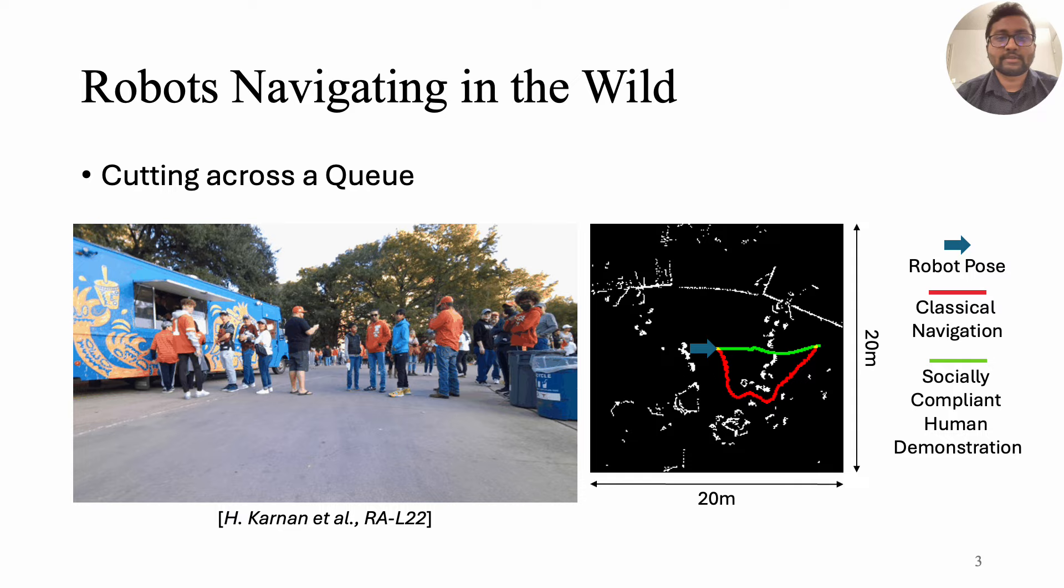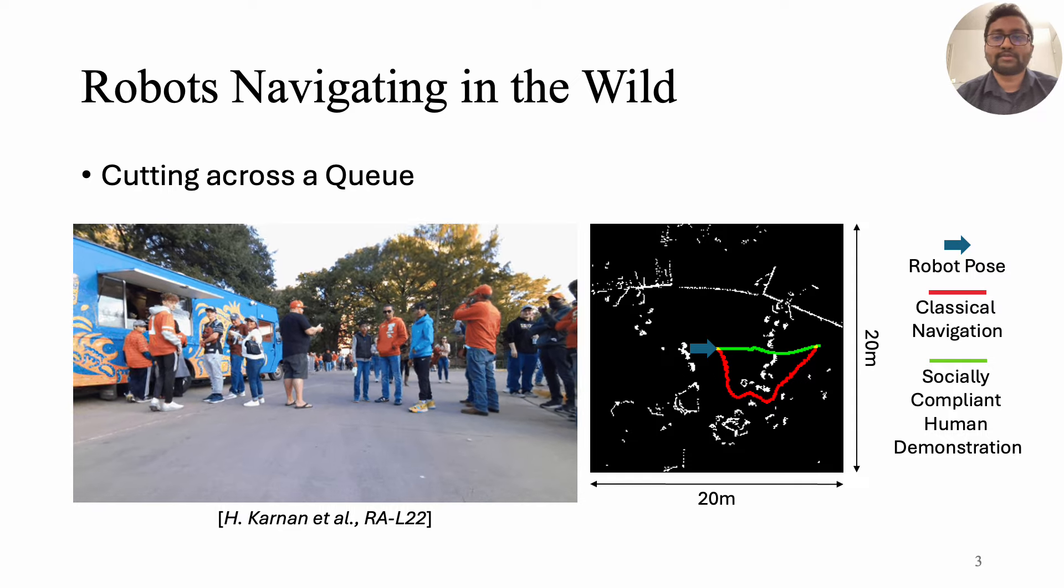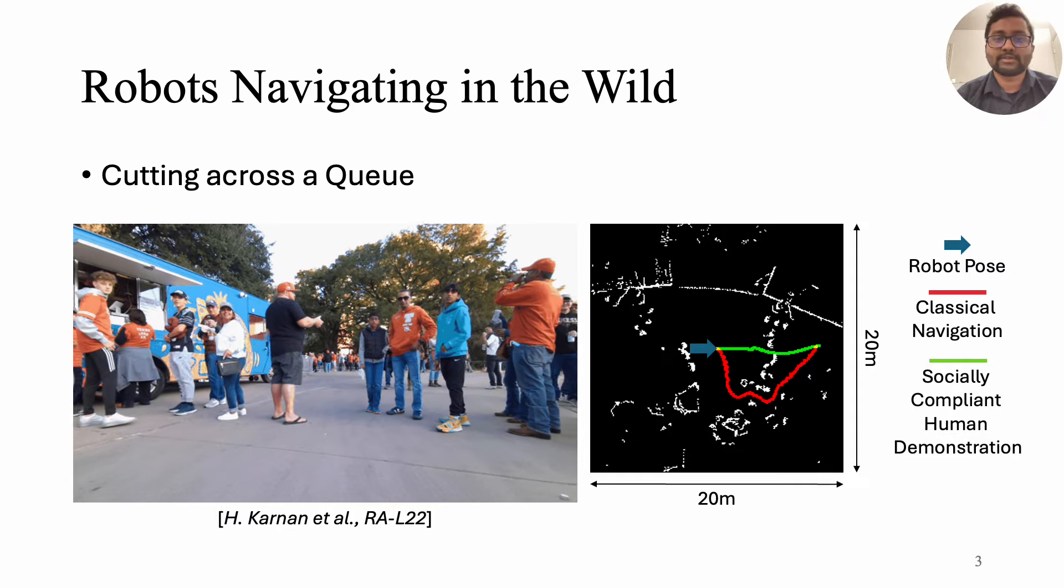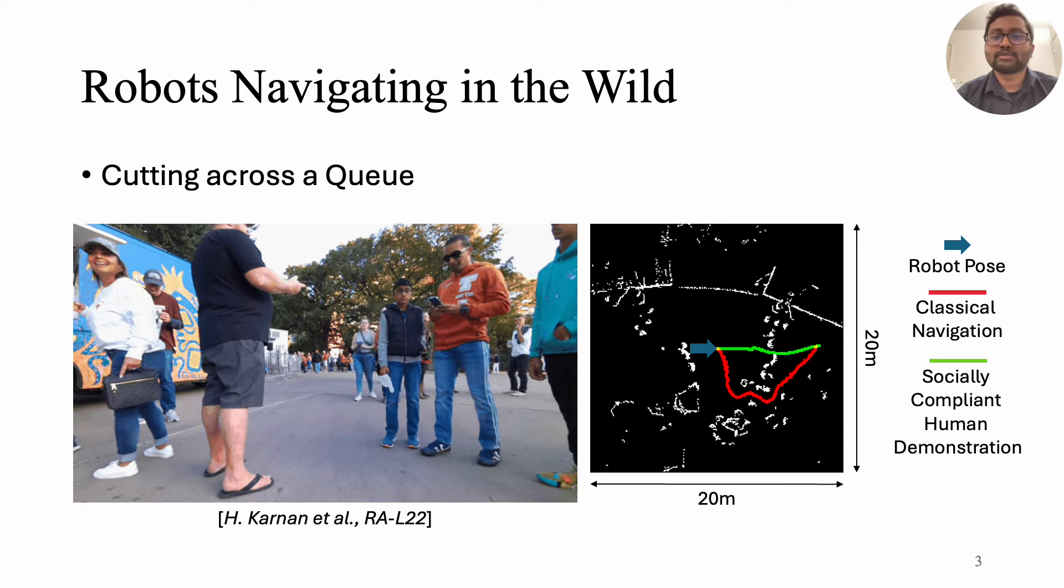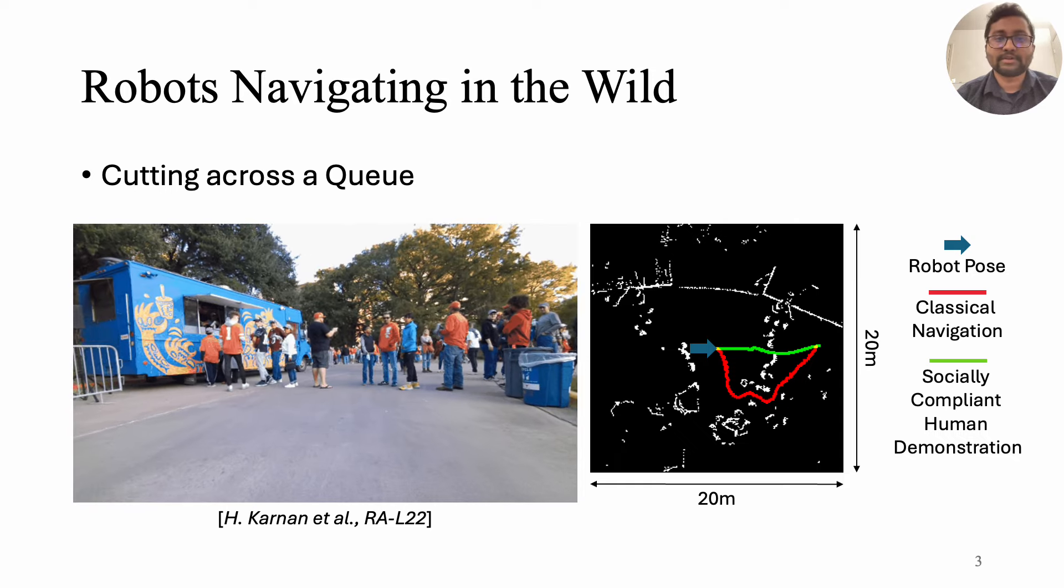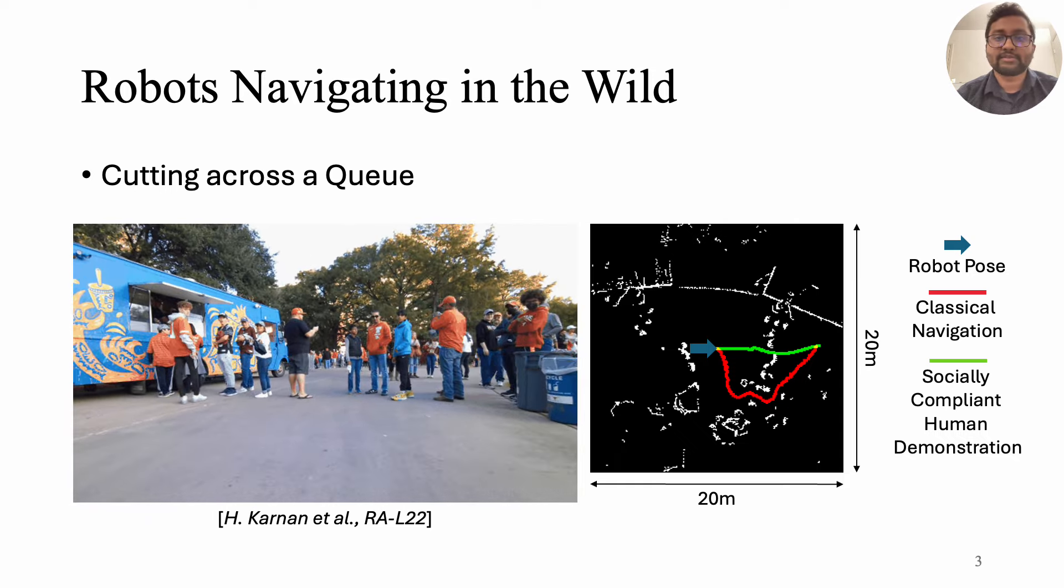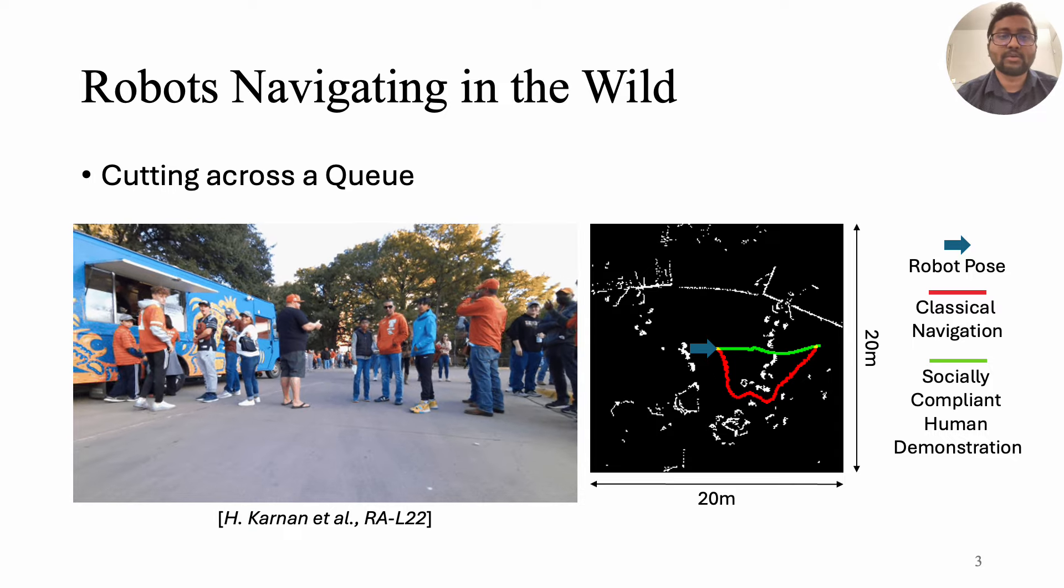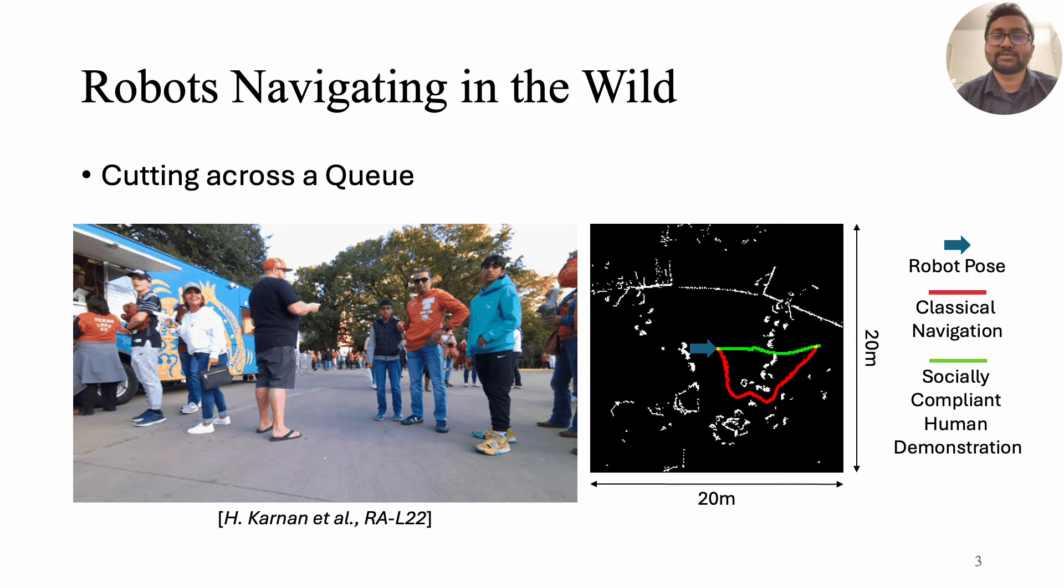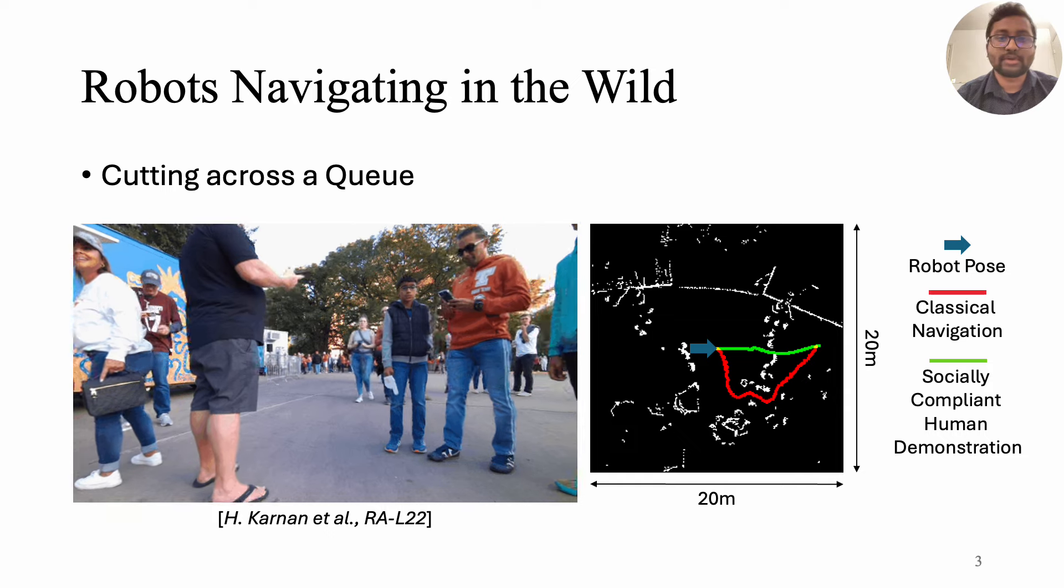If we consider robots navigating in the wild and observe a few examples from a navigation dataset like a robot navigating a queue, the robot shown in the center facing right is visualized with white dots representing humans or obstacles while the green path shown on the screen gently moves through the queue nudging people to make way.